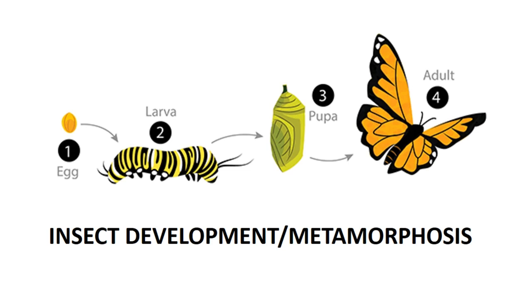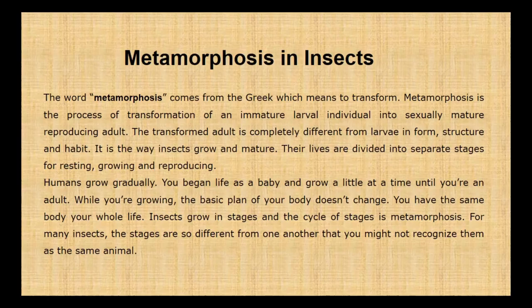Insect Development or Metamorphosis. The word metamorphosis comes from the Greek, which means to transform. Metamorphosis is the process of transformation of an immature larval individual into a sexually mature, reproducing adult. The transformed adult is completely different from the larva in form, structure, and habit. It is the way insects grow and mature.